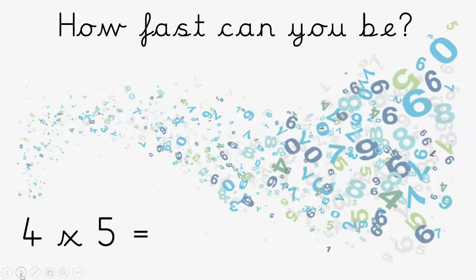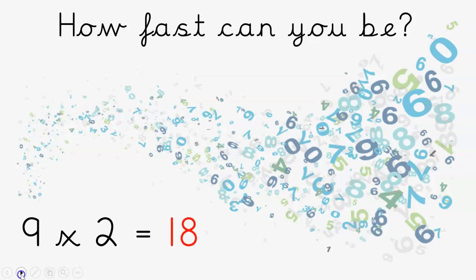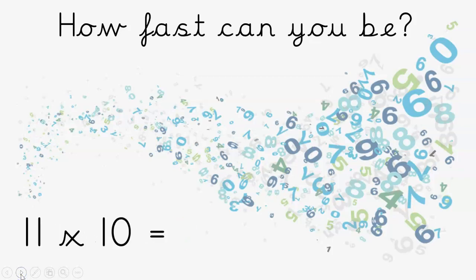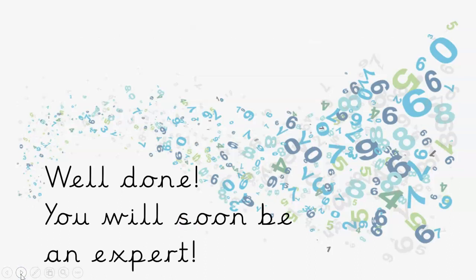What's four times five? Twenty. What's nine times two? Eighteen. Eleven times ten? Hard one this one — one hundred and ten. Six times two? It's twelve. Phew! Well done.